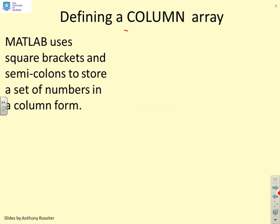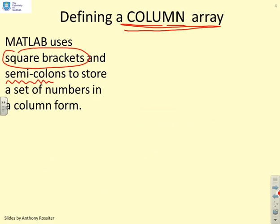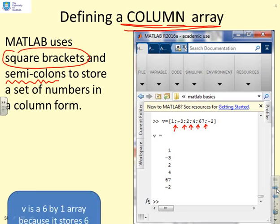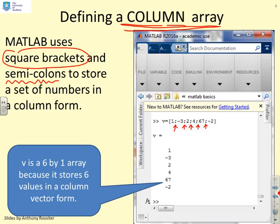You can also store variables in a column array. In order to define a column array MATLAB uses square brackets again, but now it uses semicolons. So here you can see I've put semicolons between the variables. Those semicolons tell MATLAB I'm making a column. Every time you get to a semicolon it says go to a new row. Here you can see V is now a 6 by 1 array because it's got 6 rows and 1 column.